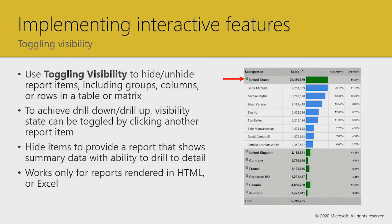Let's begin with the toggling of visibility. This makes sense with the tablex when you've got groupings and nested groupings. There's a property on text boxes but also on groups that allows you to control the visibility and to toggle the visibility by other items on the report page. Note that toggling visibility works only for reports rendered in HTML or Excel.